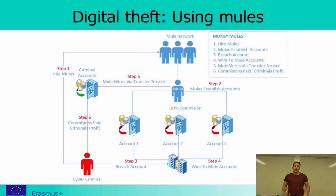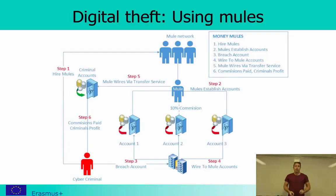The mules have genuine bank accounts — either existing ones or newly established. Once in place, the cyber criminal can breach another account, for example a net bank account, and wire-transfer funds to the mule accounts. The mules then take out the money and perform a non-traceable transfer through Western Union to the criminal's accounts, so there is no link between the criminal accounts and the criminal activity.